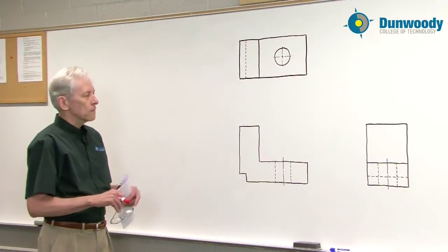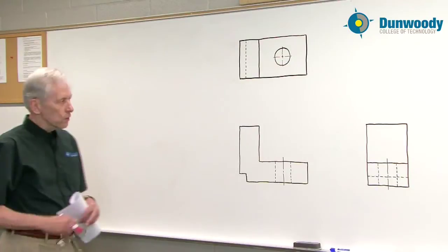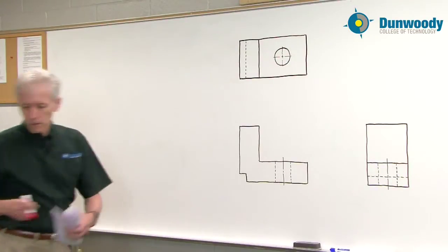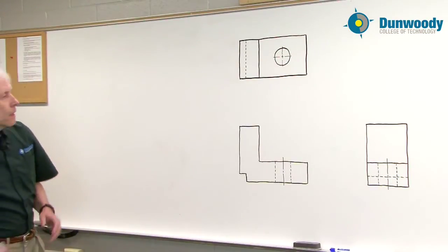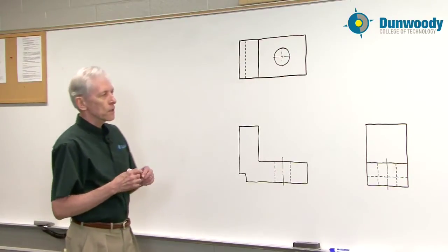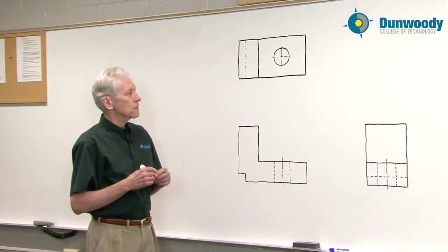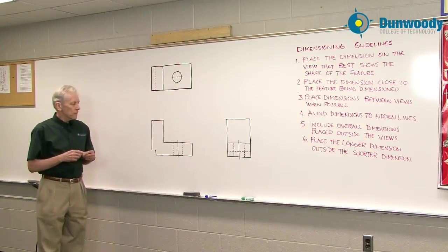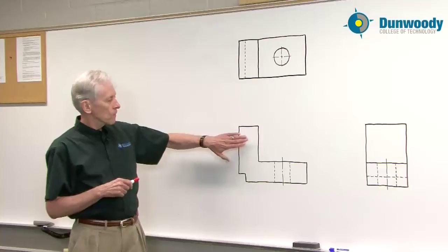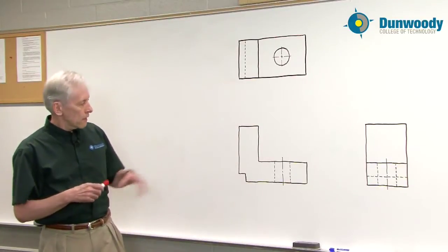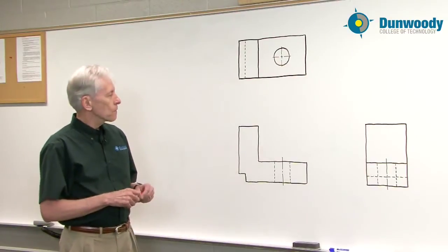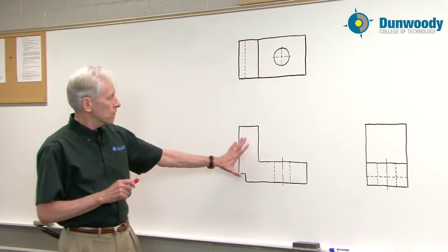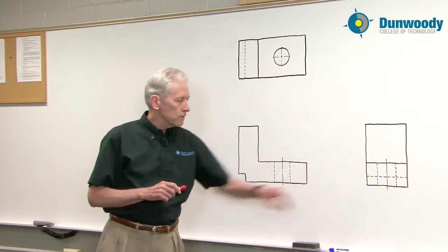What might seem obvious on this sketch also on more complex drawings becomes a little more difficult. But if you can follow along with what I'm doing here, it should help clarify that first guideline. So on this sketch, we have to dimension this feature. The sketch consists of a single part. I have a front view, a top view, and a right side view.